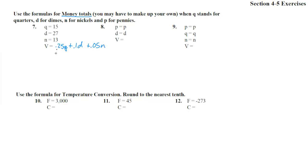So we have 15 quarters, that's going to be 0.25 times 15, plus 27 dimes, so 0.1 times 27, and 13 nickels. That's 0.05 times 13. And you could just count this out on your own. Every four quarters is a dollar, so that's going to be $3.75. Or you could do it over here, 0.25 times 15.